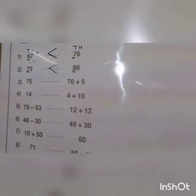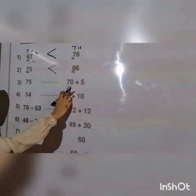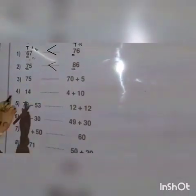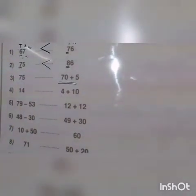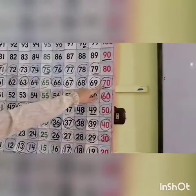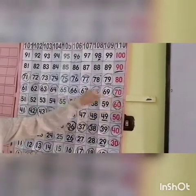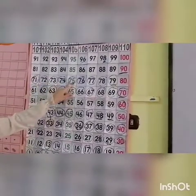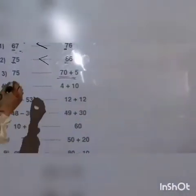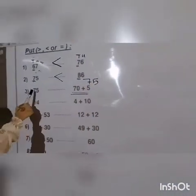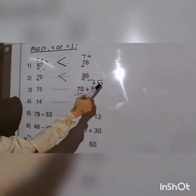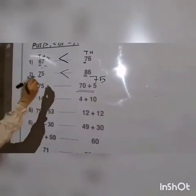Number three: seventy-five and seventy plus five. First, calculate seventy plus five. Stand on seventy and go forward five steps: one, two, three, four, five — the number will be seventy-five. We have seventy-five and also seventy-five, so they are equal.